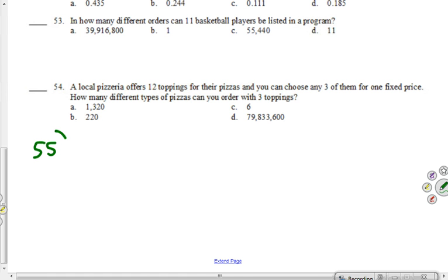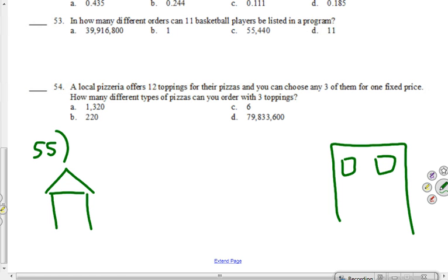55. Here's Ruthann's home. Here's her school. Here's the library. They got books.